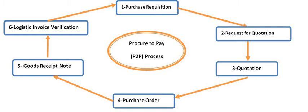The fourth stage is the Purchase Order, which is a very important stage of the P2P cycle. A PO is a formal and legal document issued to a vendor, asking them to supply a certain quantity of material at a specific price to a specific plant within a certain time period. A purchase order is not only raised for materials but also for services.